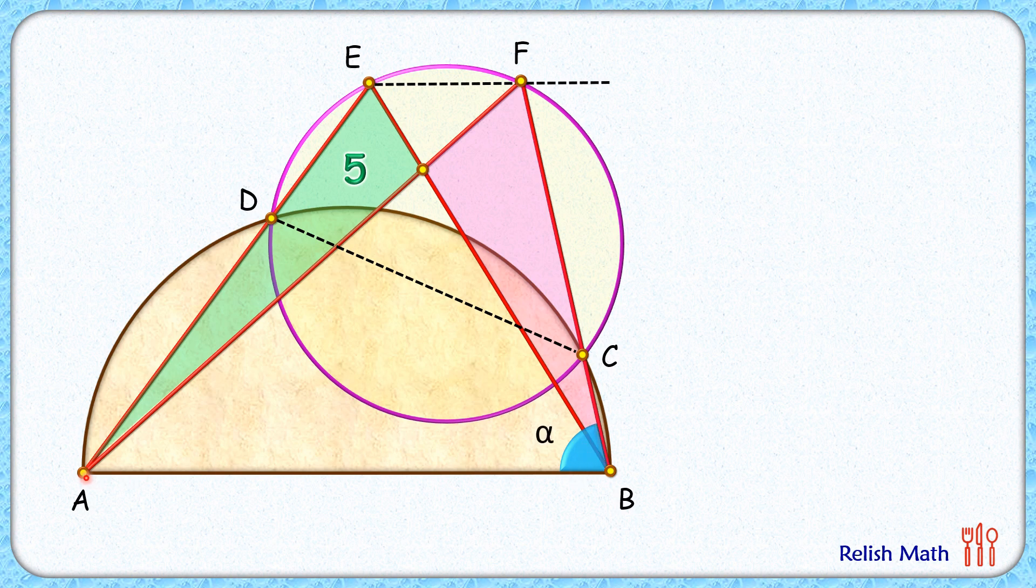Now as quadrilateral ABCD is a cyclic quadrilateral, opposite angles are supplementary, so this angle D here is 180 minus alpha.